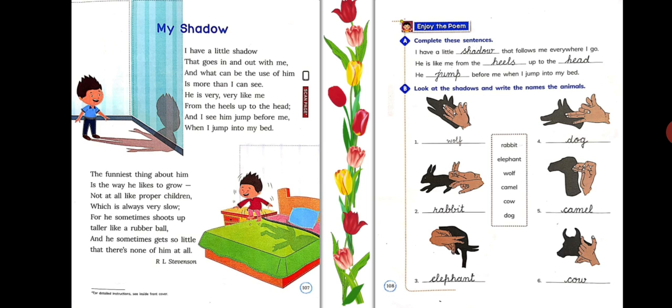In part A, you have to complete the given sentences from the poem. It's like, I have a little shadow that follows me everywhere I go. He is like me from the heels up to the head. He jumps before me when I jump into my bed.